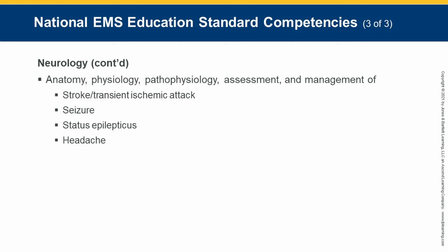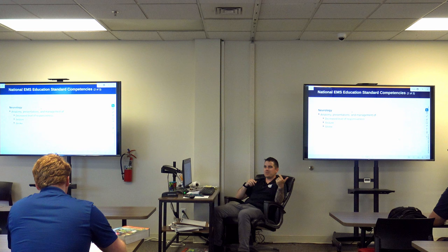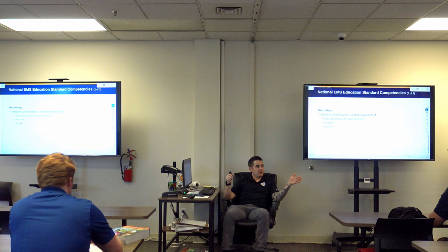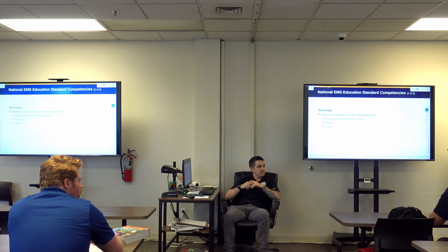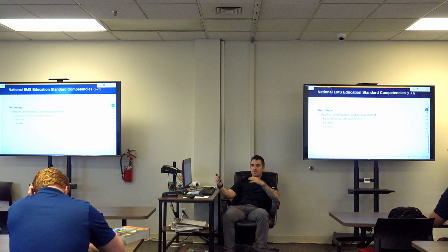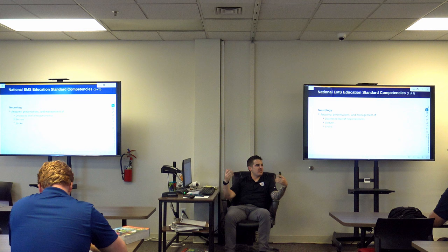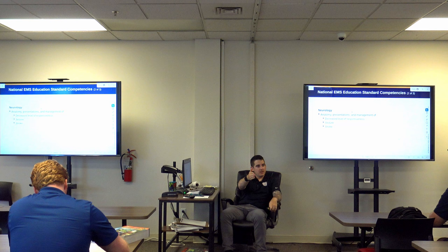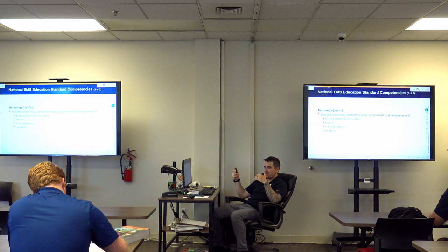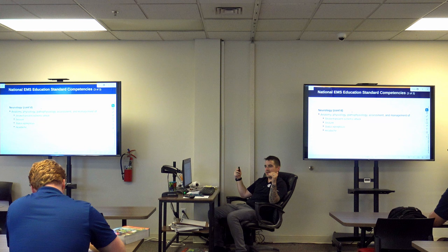We're going to talk about decreased level of responsiveness, seizures, and stroke. How do we determine decreased level of responsiveness? You use the AVPU scale — are they alert to your presence? If not, are they responding verbally? Moving into painful stimuli? If they're not tracking you as you walk in the room, they have a decreased level of consciousness. We'll also talk about headaches — when to be worried versus a simple tension headache.